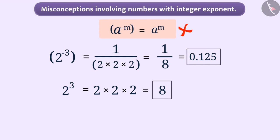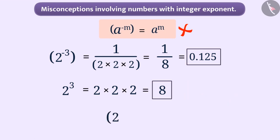Are both values equal? No. Therefore, we cannot write 2 to the power minus 3 as 2 to the power 3. It is important to pay attention to the sign of the power.